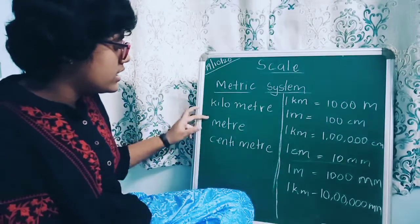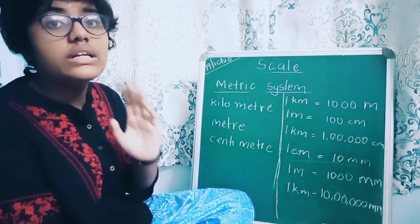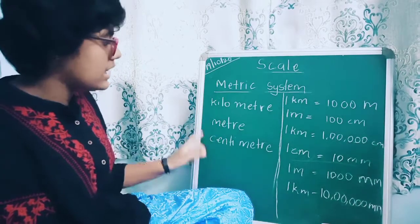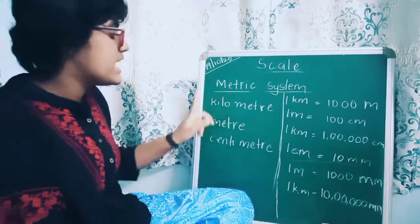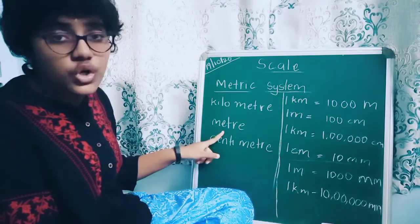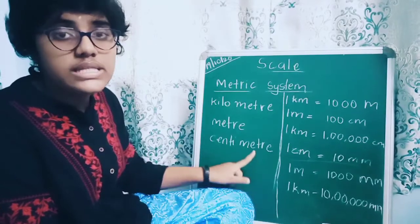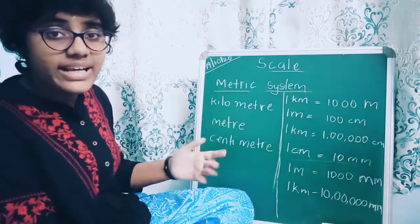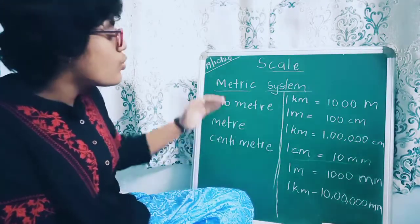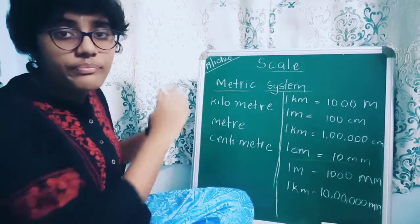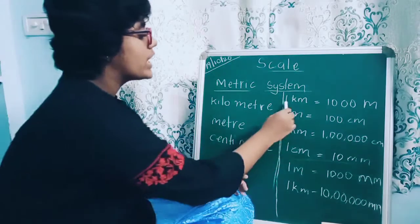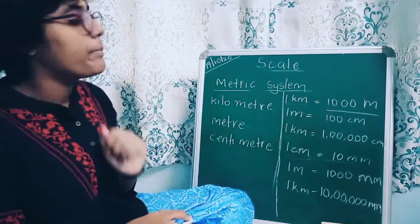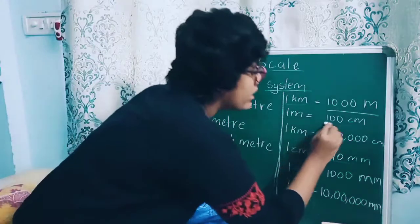These are the units used for measuring length and distance. The three main units we use are: kilometer, shown as km; meter, shown as m; and centimeter, shown as cm. These are the three main metric system measurements for distance. The relationship between them: 1 kilometer equals 1000 meters, and 1 meter equals 100 centimeters.